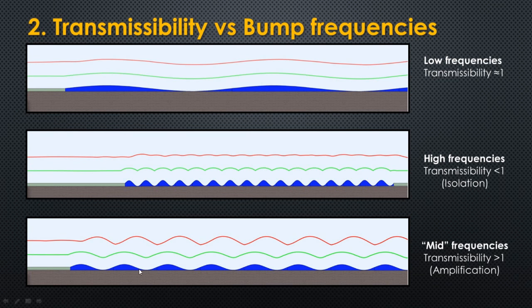When you hit bumps that have similar frequencies to the natural frequency of the bike, the suspension will amplify the bump as we saw previously. These bump frequencies match the natural frequency of the bike and the suspension amplifies the bump, causing instability to the ride.